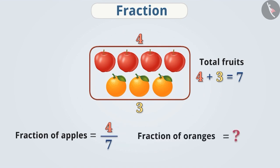Similarly, can you find the fraction of oranges in this group? You've got it right. Here, there are three oranges among the group of seven fruits. Therefore, the fraction for oranges here is three by seven.